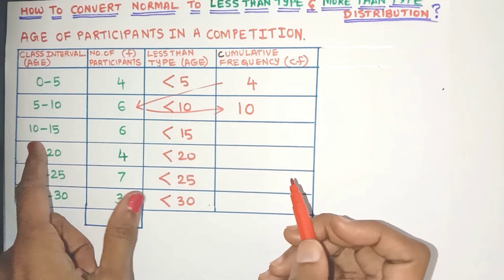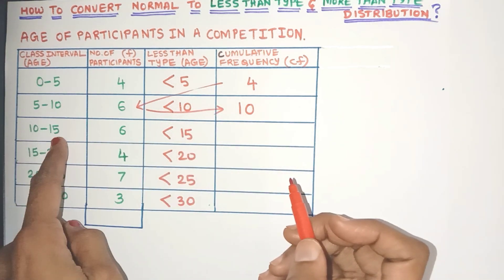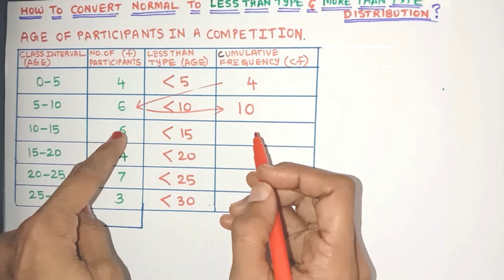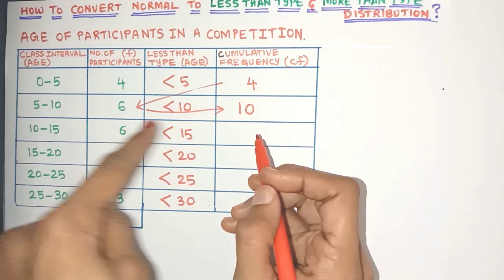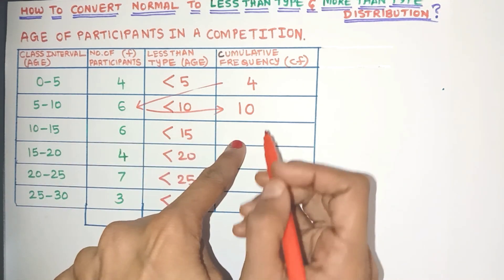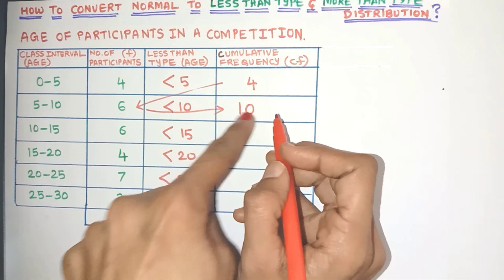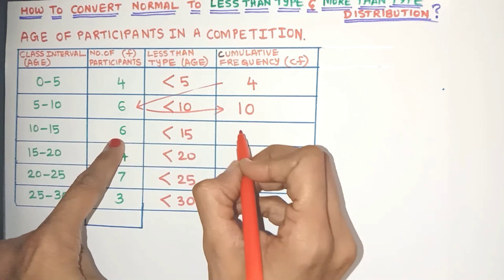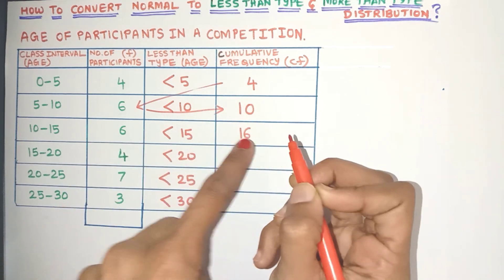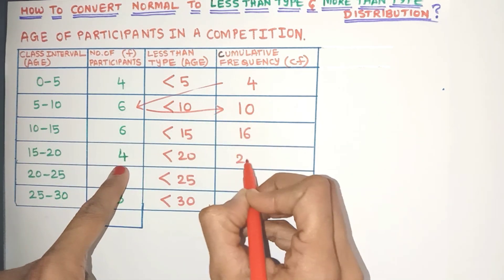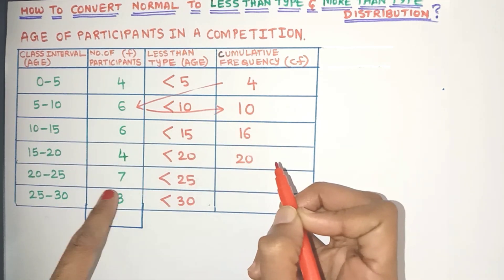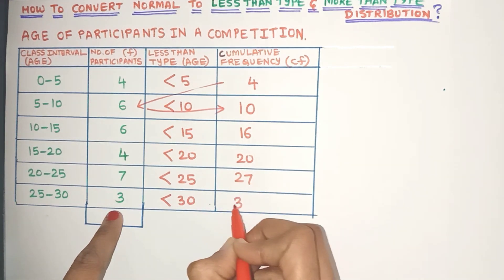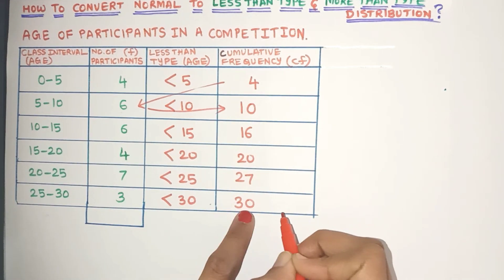Now let's try for the next class interval. 10 to 15 has 6 participants, so surely these 6 will belong in this group but I also need to add 10 to it, so I will get 10 plus 6 which is 16. So in this way, 16 plus 4 is 20, 20 plus 7 is 27, and 27 plus 3 is 30.